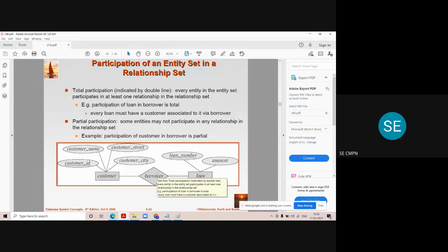Here if you see, all the types of loans in the loan table are associated with one customer. So definitely one customer is there for every loan. That's why this is total participation.